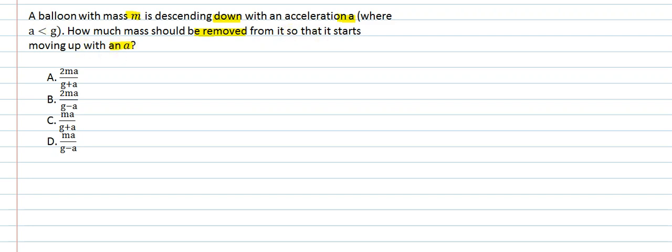The question is asking: we have a balloon moving downward with acceleration a. We need to find how much mass to remove from the balloon so that it moves upward with acceleration a. Let's say the balloon has mass m, and we remove mass m₀, so the remaining mass is m' which equals m minus m₀.